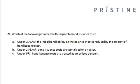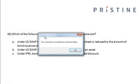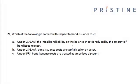Now let us look at this problem: which of the following is correct with respect to the bond issuance cost? The bond issuance costs are the administrative fees or other kinds of expenses that are associated with the issuance of a bond.